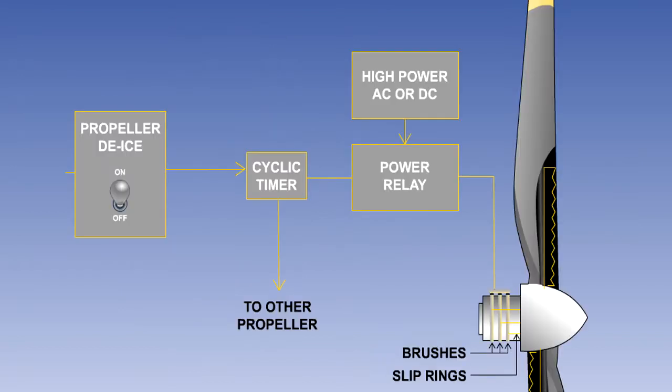The power required for heating is conveyed to the elements via cables, slip rings, and brushes, contained within a brush block housing.